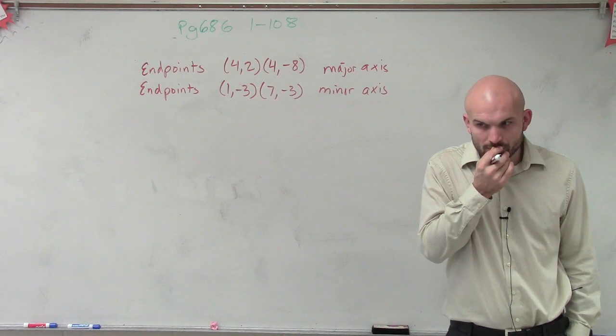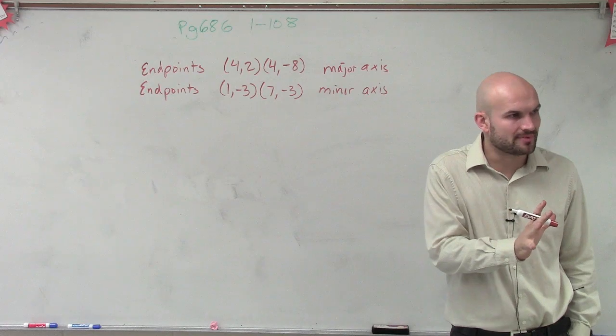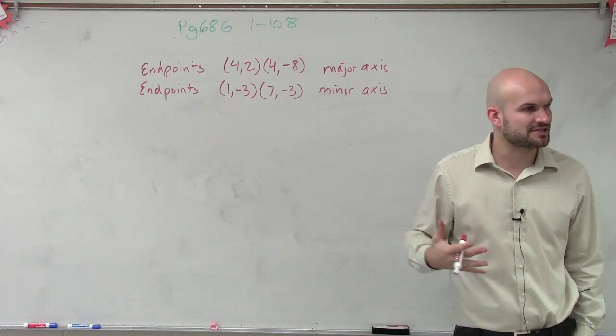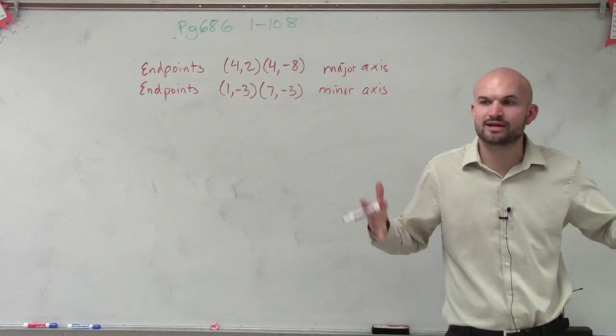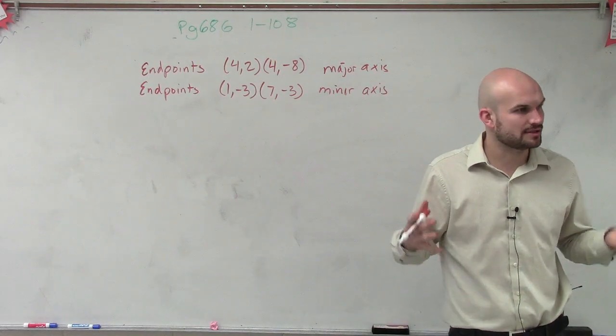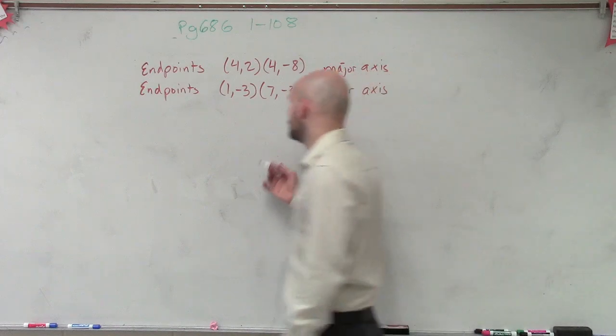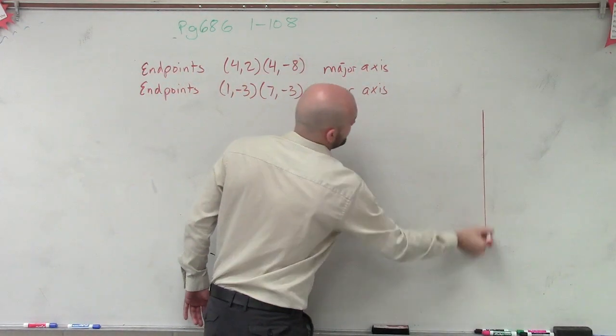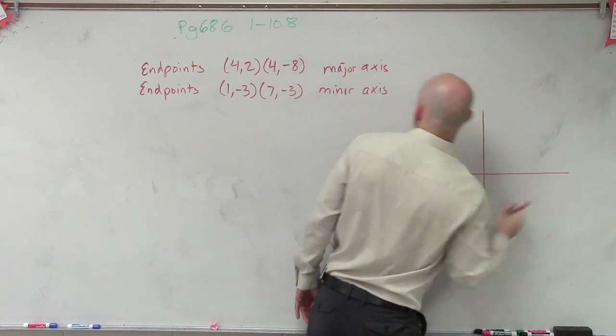The first step whenever you're given some information is let's try to plot the information so then we can determine are we dealing with a vertical or a horizontal ellipse. So first thing we're going to want to do is graph the information that we're given.